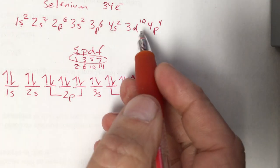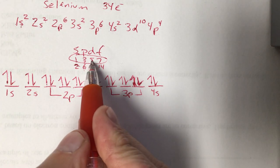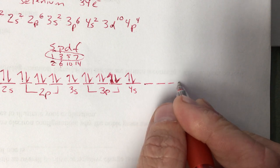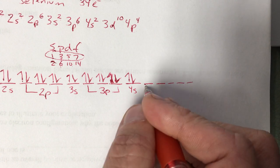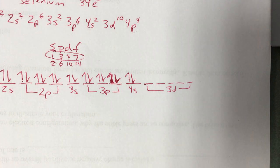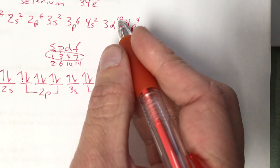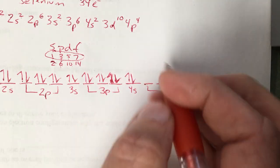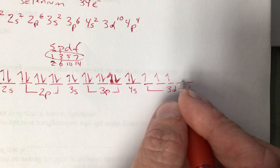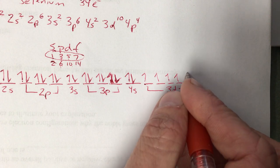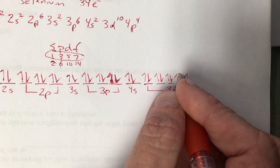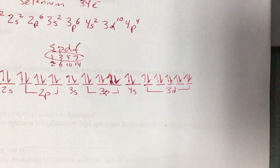And then the next one is d. Five sublevels in a d orbital. So you got five lines. And call it 3d. And again there's 10 in there. One on each line then double them up. One, two, three, four, five, six, seven, eight, nine, and ten.